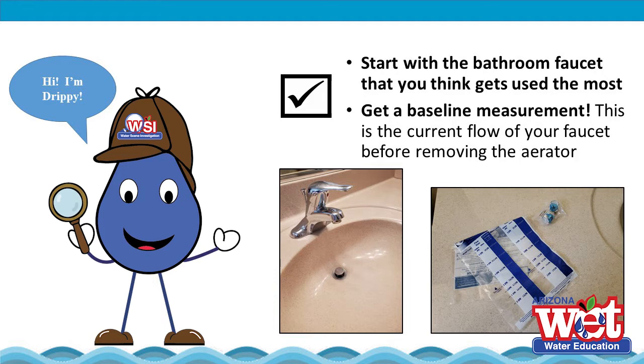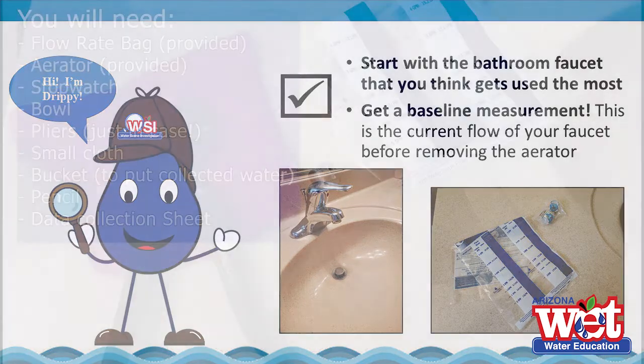Start with the bathroom faucet that you think gets used the most. You will start by getting a baseline measurement. This is the current flow of your faucet before removing the aerator.